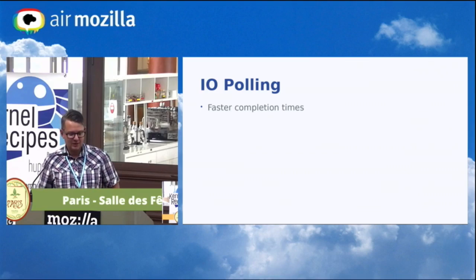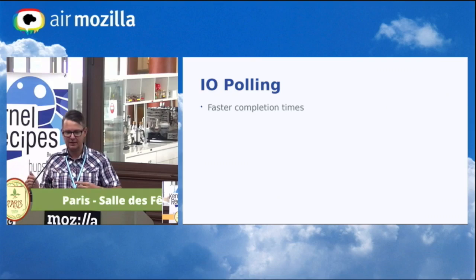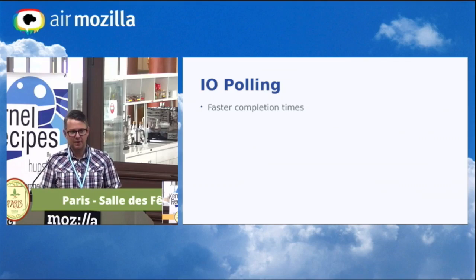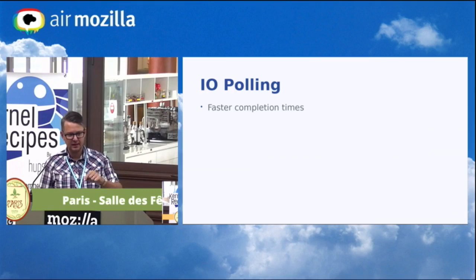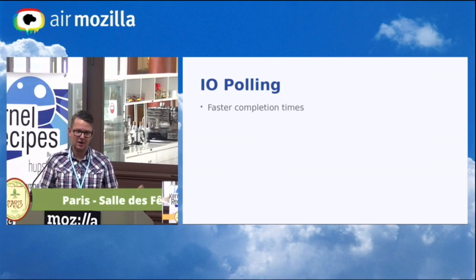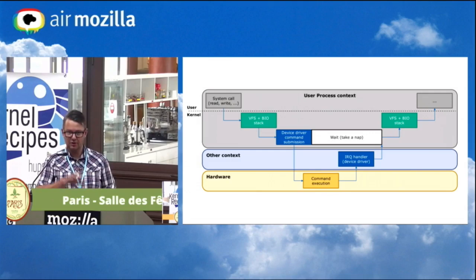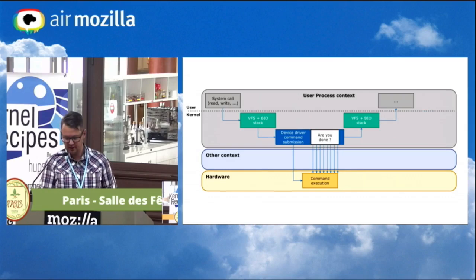IO polling is a different way of doing IO completions. Normally when you hand in a piece of work, the application goes away, does something else, and then the device raises an interrupt saying the work is done and the application wakes up. For new non-volatile memory devices, completion times are so quick that the act of going to sleep, getting the interrupt, and waking up is a substantial part of the total completion time — unlike a hard drive where a request takes ~10ms, these devices can do IO in 2–3 microseconds.